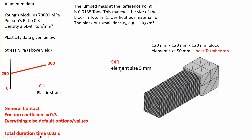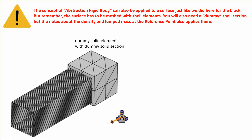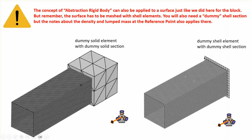For the mesh, I'll use shell elements with a size of 5mm and reduced integration — S4R. For the rigid block, the mesh is totally insensitive to its nature and type, so I'm going to use linear tetrahedral elements with a size of 50mm, which will be very coarse. The same approach — declaring it rigid — also works for a shell plate, but I'm only going to show the block version in this video.